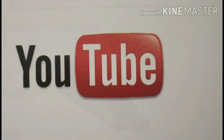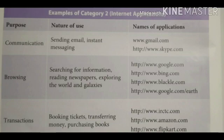Let's look at various categories of internet applications and their purposes. The first purpose is communication — sending email and instant messaging using applications such as Gmail and Skype. The next purpose is browsing — searching for information, reading newspapers, and exploring the world and galaxies through search engines like Google, as well as transactions like booking tickets with IRCTC.